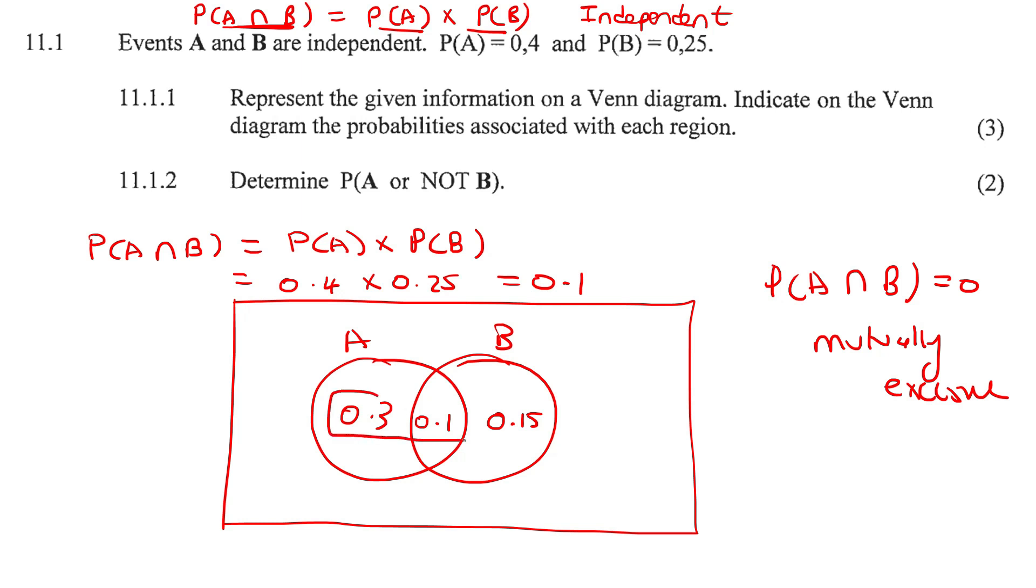Now, we can add these three things together, and that would give us 0.55. That's called A or B. We know that all probability should add up to 1. So to work out what's on the outside here, we could say 1 minus 0.55, and that'll be 0.45. So we can put that on the outside of here. So it says represent the information on a Venn diagram. We've done that.